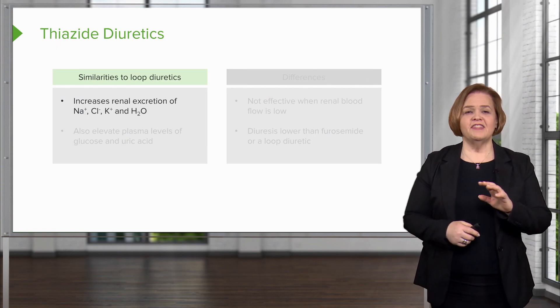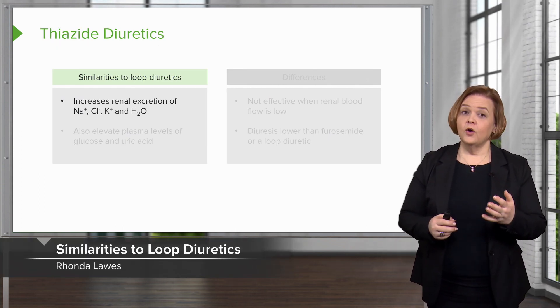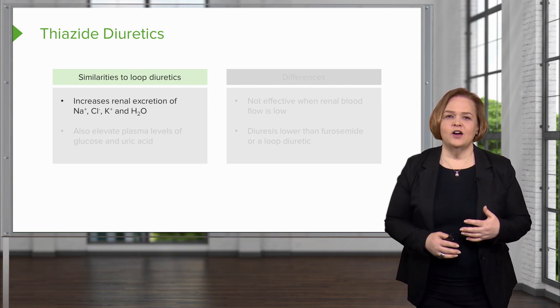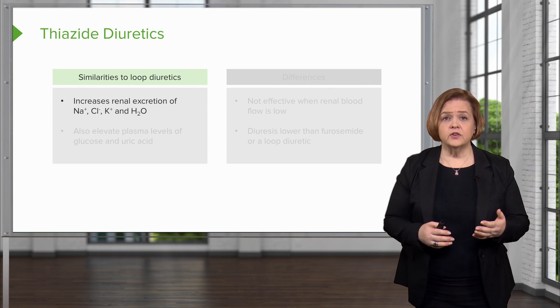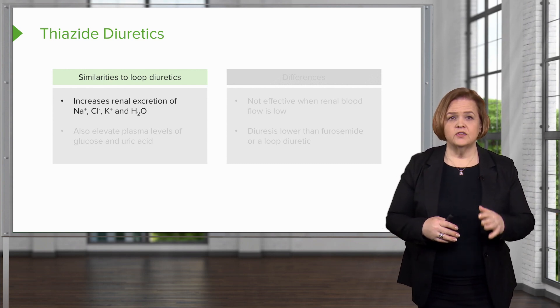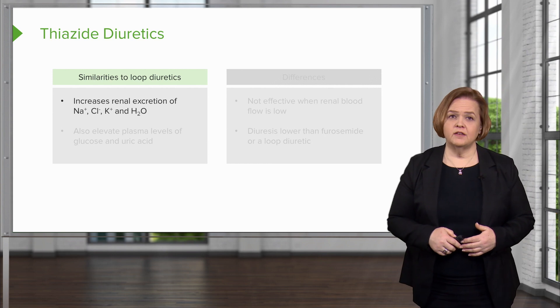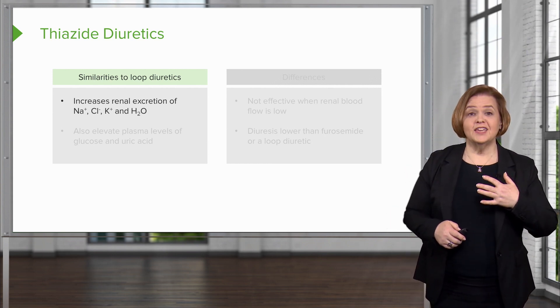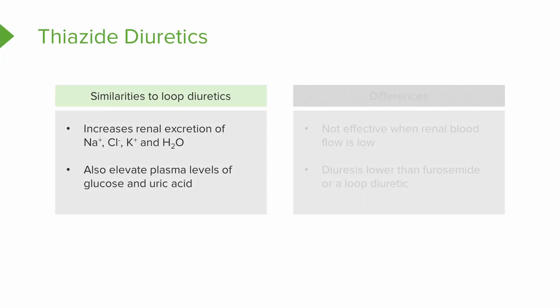Thiazide diuretics are similar to loop diuretics. Thiazides also increase renal excretion — meaning they get rid of sodium, chloride, potassium, and water, because that's really what we're looking for. But they'll also elevate levels of glucose and uric acid, just like loop diuretics. So thiazides act similarly to loop diuretics and have some of the same side effects.